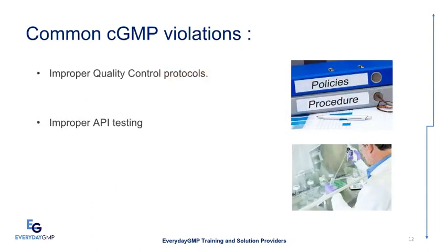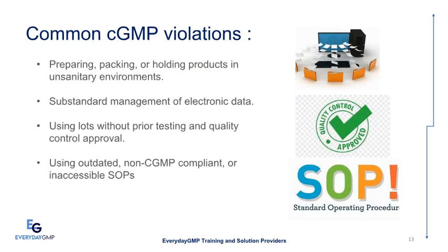Additional violations include: improper quality control protocols, improper API testing, preparing, packing, or holding products in unsanitary environments, substandard management of electronic data, using lots without prior testing and quality control approval, and using outdated, non-CGMP compliant, or inaccessible SOPs. Failure to review drug production records before release and failure to take corrective action to ensure no repeated incidents are also common.